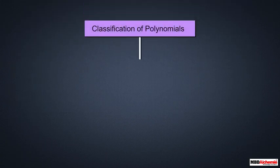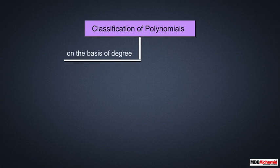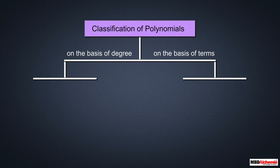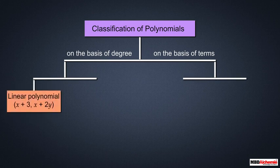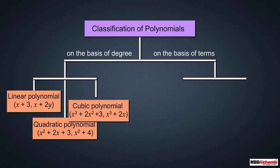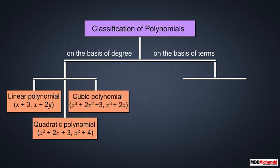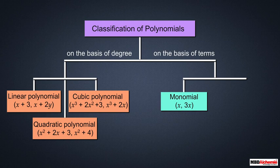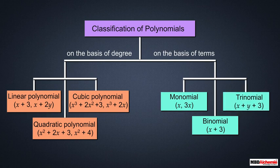Polynomials are classified on the basis of degree and on the basis of terms. The highest power of x in p(x) is called the degree of the polynomial. A polynomial of degree 1 is called a linear polynomial, degree 2 is quadratic, and degree 3 is cubic. A polynomial having only one term is called a monomial, two terms a binomial, and three terms a trinomial.